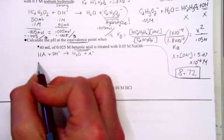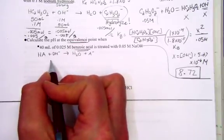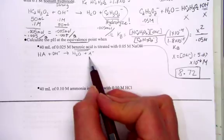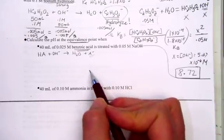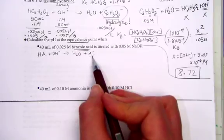Now at the equivalence point, the number of moles equal for acid and base means there is no limiting and no excess reagent. Therefore, the only thing affecting the pH is the hydrolysis of the conjugate base coming from the benzoate ion.